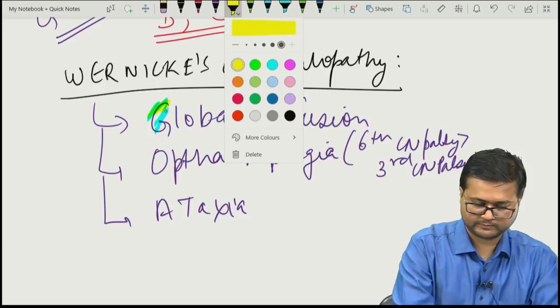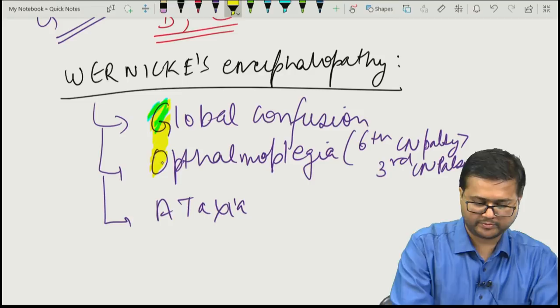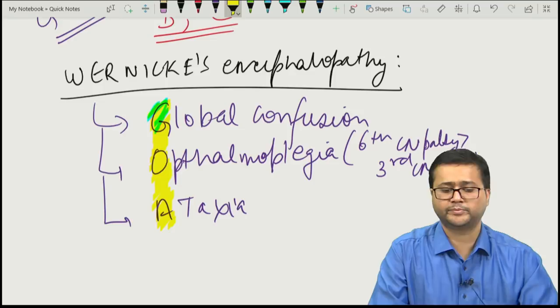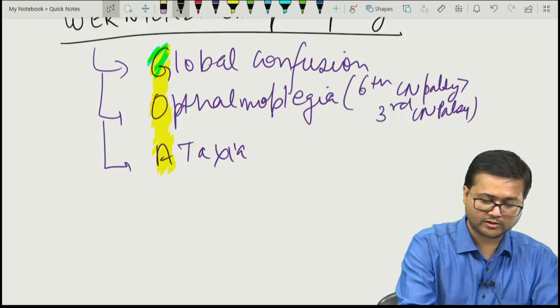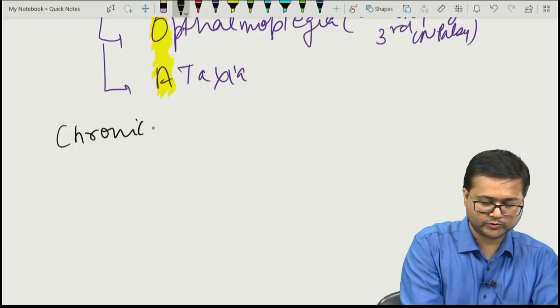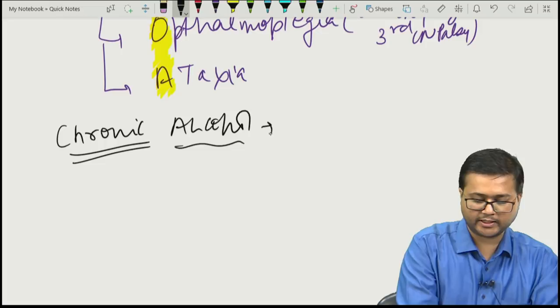Wernicke's encephalopathy is described by a triad of symptoms — global confusion, ophthalmoplegia (generally described by 6th cranial nerve palsy more than 3rd cranial nerve palsy), and ataxia — remembered with the mnemonic GOA. Patients who chronically use alcohol develop thiamine deficiency, due to poor nutrition or erosion of the GI tract causing poorer absorption of thiamine.